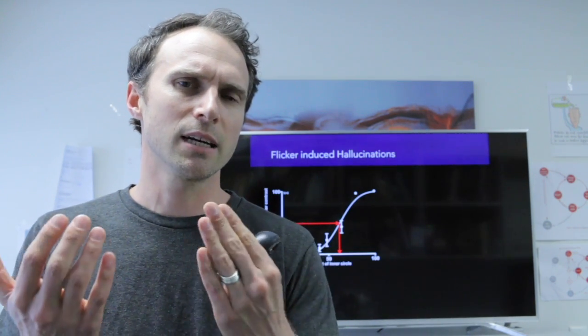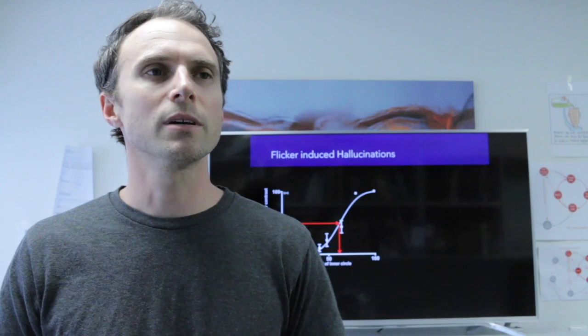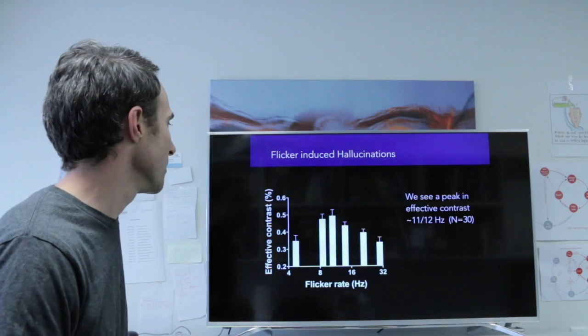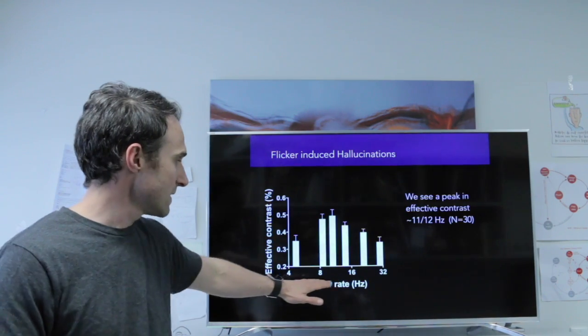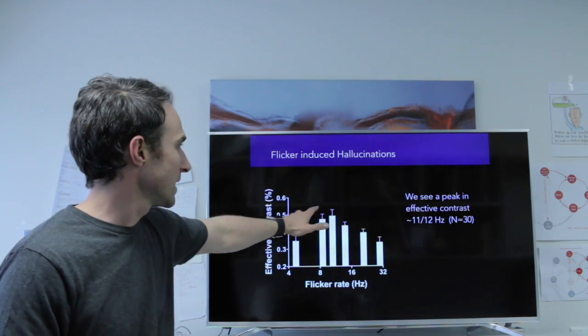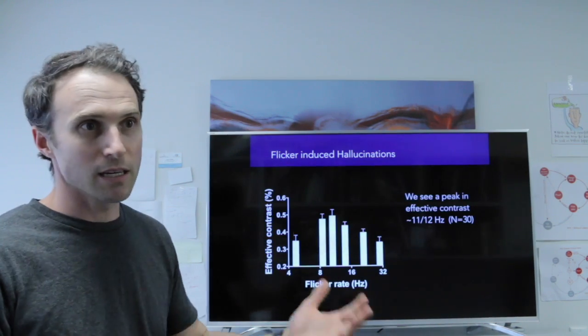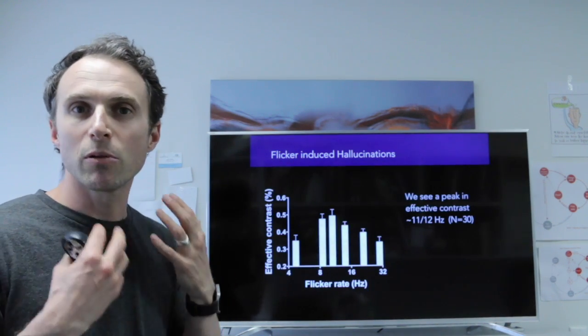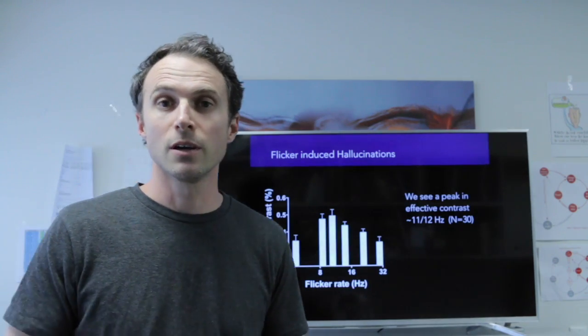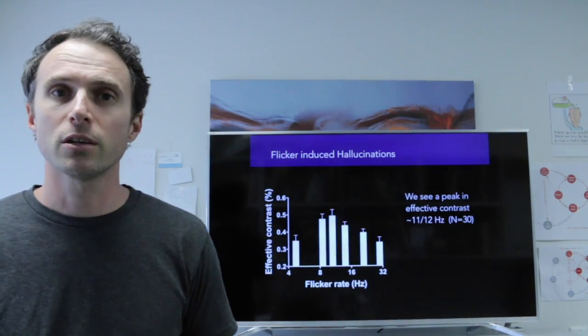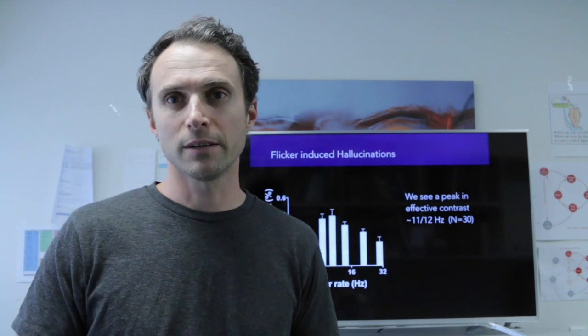This is a technique to measure the effective contrast, the dark versus the light of those blobs rather than people just describing it or drawing it. And here's some data from the paper where we're showing the faster we flicker that doughnut, we get a function like this where medium flicker rates around say 10, 11, 12 hertz, people are seeing stronger hallucinations. Once we get to faster flicker rates up here at 20, 30 hertz, the strength of the hallucination goes down.